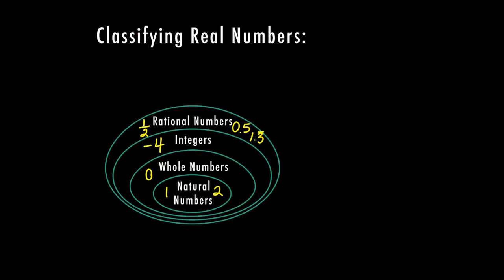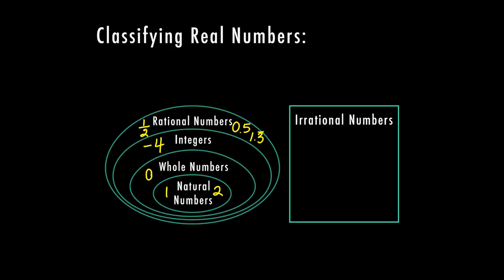Then we have what is considered our irrational numbers. Irrational numbers are going to be numbers such as pi. Pi is approximately 3.1415 and continuing. Pi never ends and never repeats. It continues indefinitely and does not have a pattern. That's what makes it an irrational number.